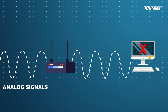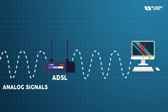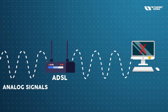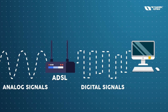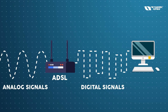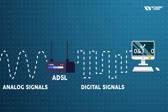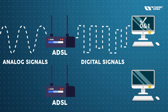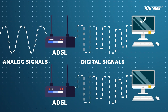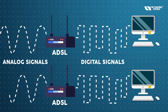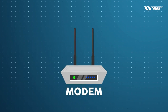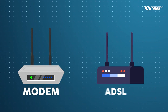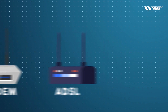Since we can't send analog signals directly to the PC, the ISP places an ADSL device to handle this. This device converts incoming analog signals into digital signals — into 0s and 1s — which the computer understands. In the same way, it takes outgoing digital signals and converts them back into analog signals. This conversion function is the modem, and it is integrated into the ADSL device.